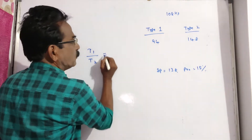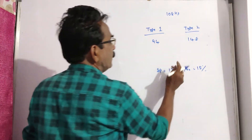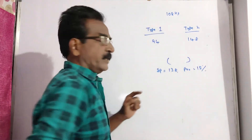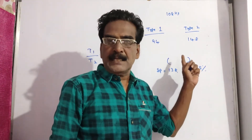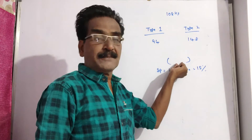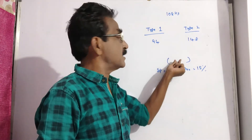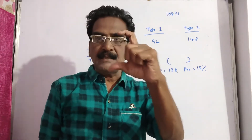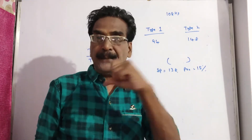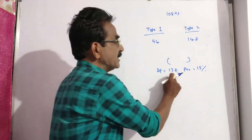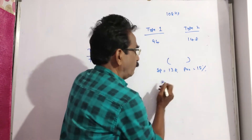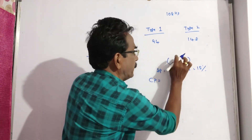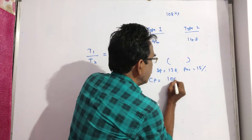For type 1 to type 2, we cannot put the sold price here. The mean price means cost price — that is the worth price. So from this data, we have to find the cost price and put the cost price as the mean price.